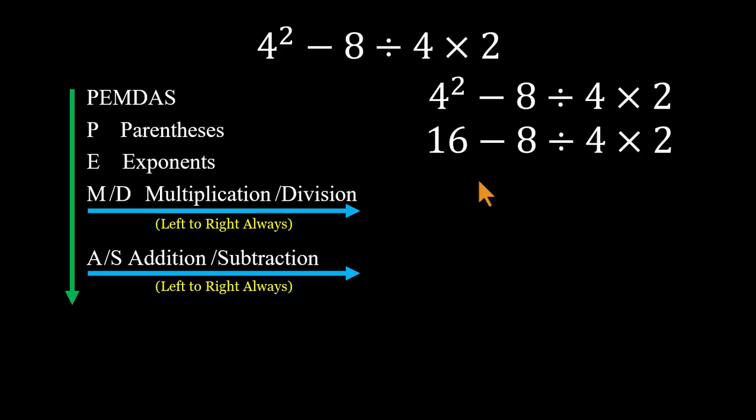Now handle division and multiplication from left to right. 8 divided by 4 equals 2. Then 2 times 2 equals 4. Finally, subtraction. 16 minus 4 equals 12. That's the correct answer. 12.